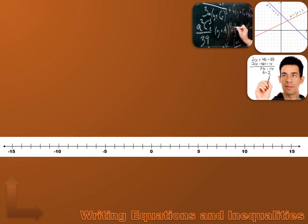Now let's talk about graphing and solving some equations and inequalities. We'll start with an easy one: x equals minus 4. That is the solution — if we've got x equals something, we've solved for x. And if we needed to graph that on a number line, it would be very easy: we just put a dot at minus 4, and that means x equals minus 4.